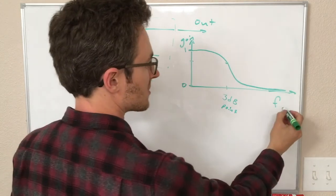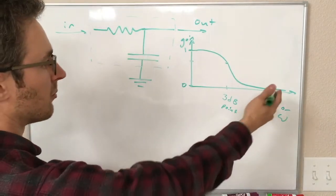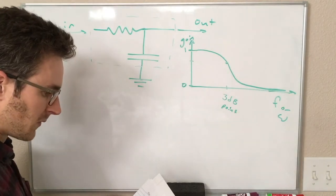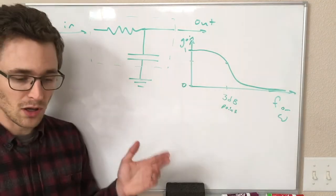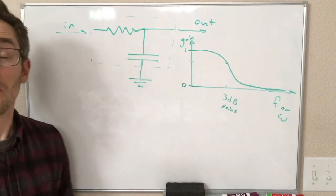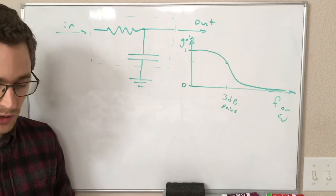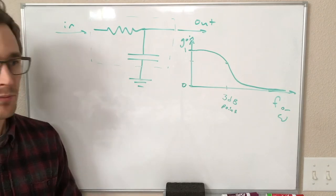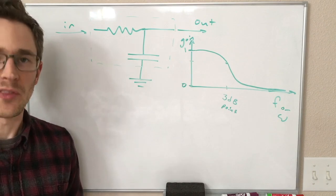Somewhere about right there is our 3 dB point. I wrote F here, but of course, that could be an omega scale also. We're just different by a factor of 2 pi. This is our first example of a filter. We have lots more. We have a few other kinds of filters to learn about and some more things to learn about how to talk about their behavior as well.